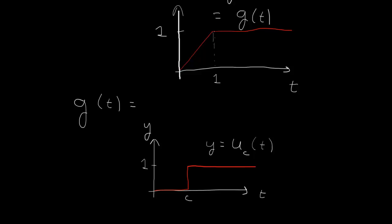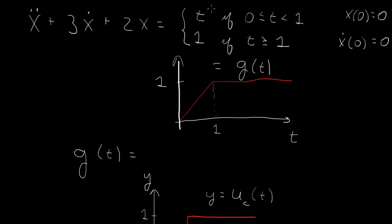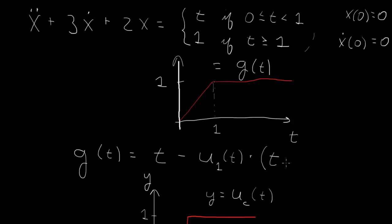If we want to write g of t, going back to our inhomogeneous term, we can use the Heaviside step function. When t is smaller than 1, this is just t. When t is larger than 1, it becomes 1. So we subtract off t after we step up: u sub 1 of t. This is 0 if t is smaller than 1, and 1 when t is larger than 1. Then we subtract off t, and since there's a minus sign, when t is larger than 1 the whole expression gives t minus 1 times... which gives plus 1.